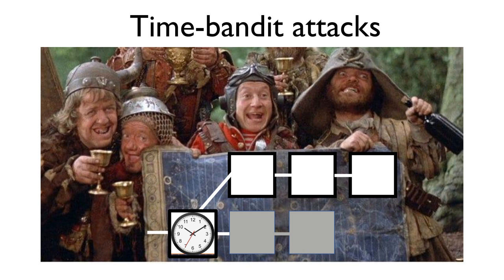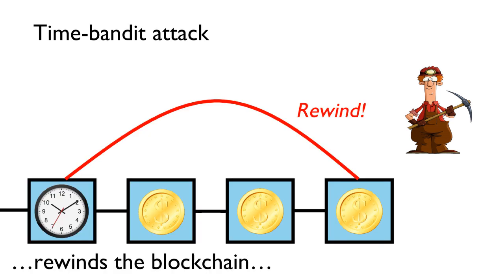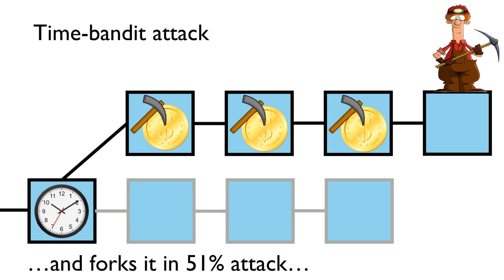An even more serious security problem, however, lurks beneath the surface, and we call it time-bandit attacks after a movie from the 80s. Consider a blockchain with arbitrage opportunities that regularly occur as we describe in this paper, and consider a miner who's mining on top of this blockchain. Normally, a miner should be incentivized to mine on the most recent block it's seen. However, in a time-bandit attack, a miner is instead incentivized to rewind the blockchain, attempting a 51% attack in which it steals all of the arbitrage profits of previous bots. It can then use the profits from these arbitrage attacks to subsidize its own 51% attacks, potentially paying for hashrate rentals from the cloud out of these profits, and destabilizing the whole blockchain.